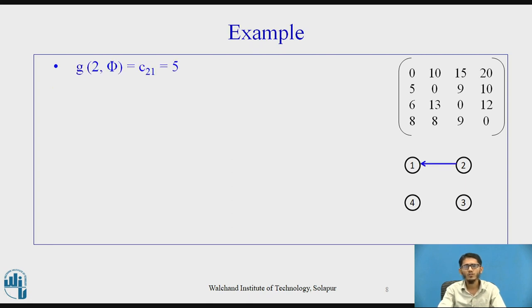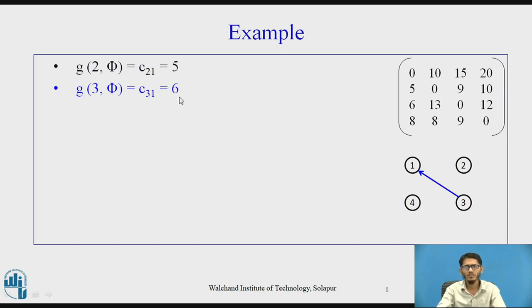For the base case |S| = 0: g(2, ∅) = c_21 = 5, g(3, ∅) = c_31 = 6, and g(4, ∅) = c_41 = 8.